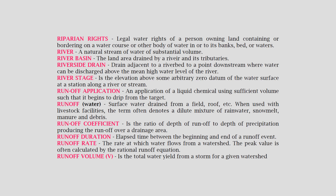River basin: the land area drained by a river and its tributaries. Riverside drain: a drain adjacent to a riverbed to a point downstream where water can be discharged above the mean high water level of the river. River stage: the elevation above some arbitrary zero datum of the water surface at a station along a river or stream.